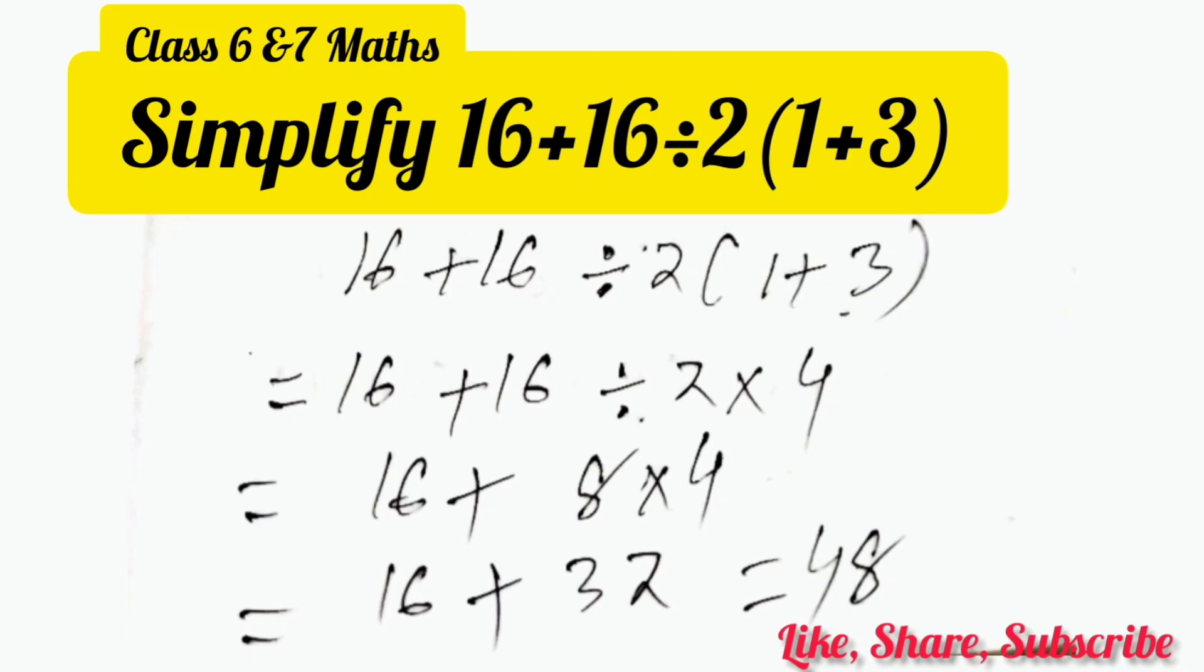Then we will do the division work. So 16 plus 16 divided by 2 equals 8 multiplied by 4, which equals 16 plus. Then we will do the multiplication work, so 8 multiplied by 4 equals 32.